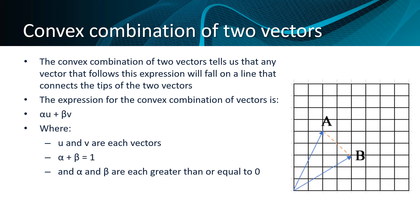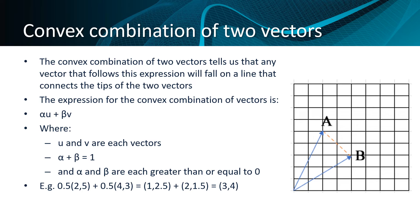So for instance, if we look at a situation where we're looking at half of vector a, which is (2, 5), and half of vector b, which is (4, 3), we would come to a vector (3, 4), which, as you can see, is on the dotted line connecting the two vectors.